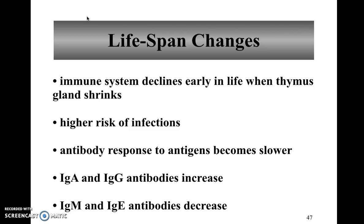As we get older, the risk of infections tends to go up and the antibody response to antigens begins to slow down. Interestingly, IgA and IgG antibodies tend to increase in the body, whereas IgM and IgE antibodies tend to decrease.